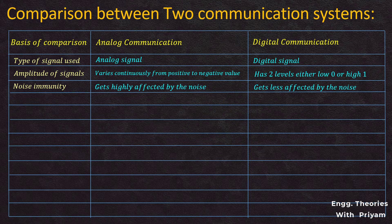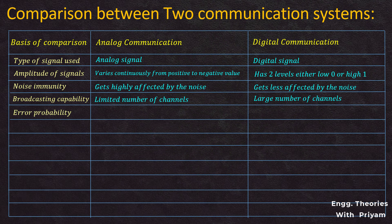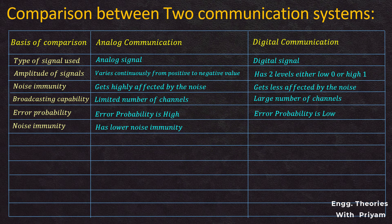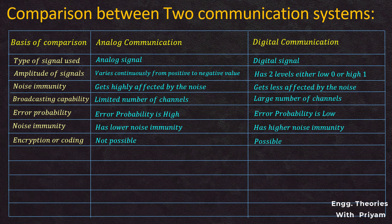Broadcasting capability: analog communication allows broadcasting to a limited number of channels; digital communication allows broadcasting to a large number of channels. Error probability: high in analog, low in digital. Noise immunity: low in analog, high in digital. Encryption: not possible in analog communication; possible in digital communication.